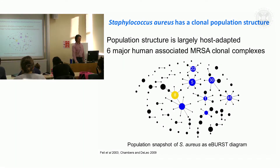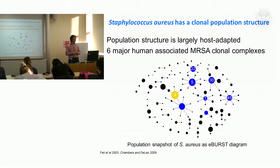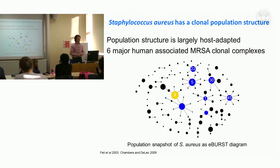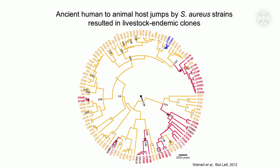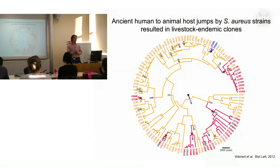This is an E-burst diagram which shows the clonal structure within the species. Each of these circles represents a different clonal complex of closely related Staph aureus sequence types, and some of the most abundant ones are indicated by the large circles. We also reconstructed a phylogenetic tree to represent the overall phylogeny across the species, taking representative strains from humans and from livestock including ruminants — cows, sheep, goats — and birds.